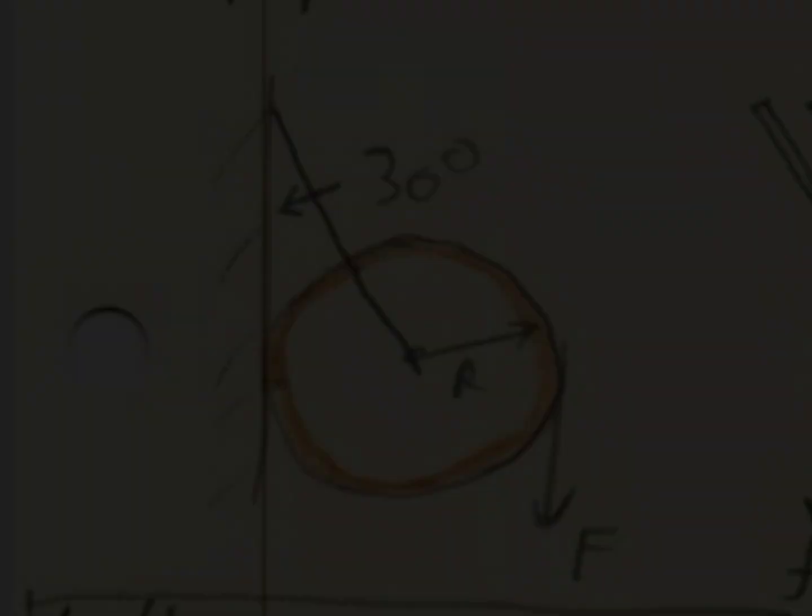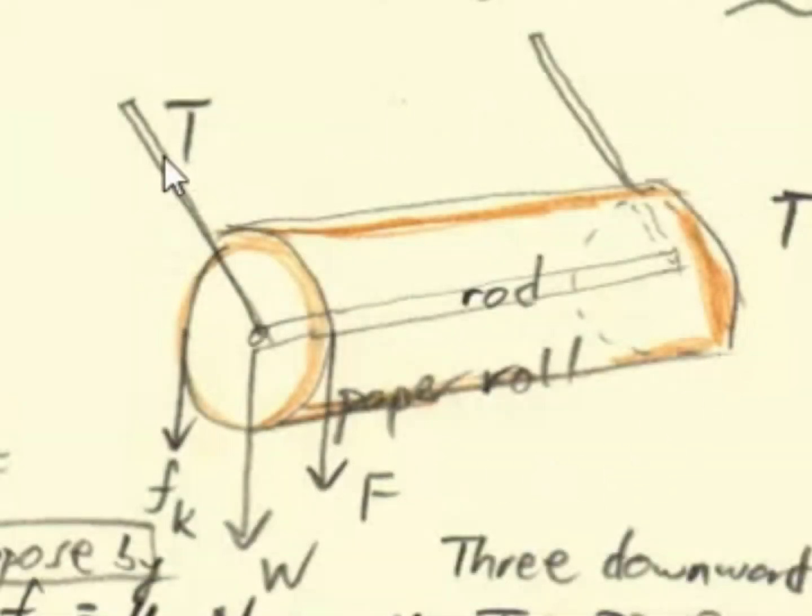Here's a diagram, a three-dimensional diagram of the situation. You have the rod that goes through the center of this roll of paper, and then you have two supporting brackets.